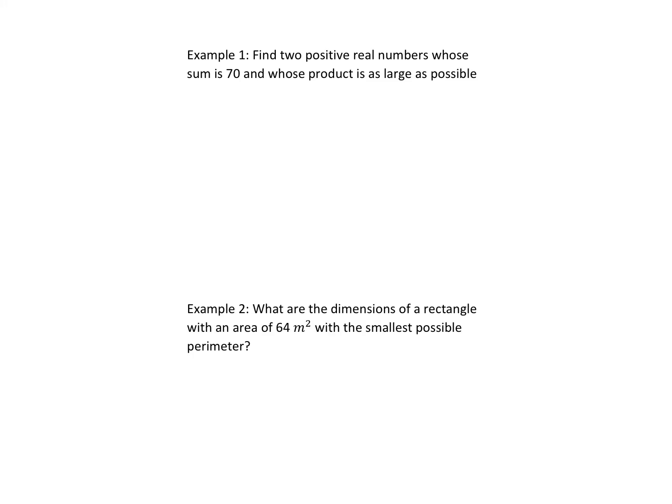In example one, we have two positive real numbers whose sum is 70 and whose product is as large as possible. I'm going to call my variables x and y. I know that x plus y equals 70, and we want the product — x times y — to be as large as possible, so we want it to be a maximum.